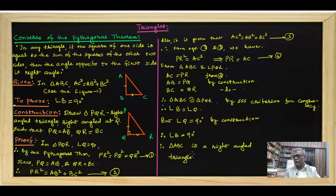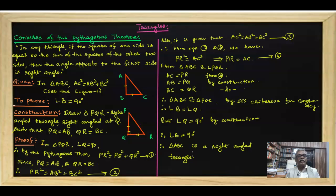So once again, I would like to restate the converse of the Pythagorean theorem: in any triangle, if the square of the longest side equals the sum of the squares of the other two sides, then the triangle is a right angle triangle. That is what we have proved now.